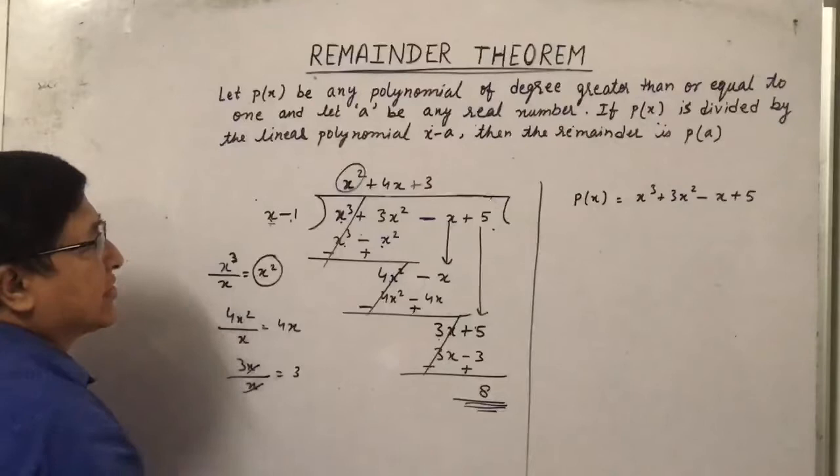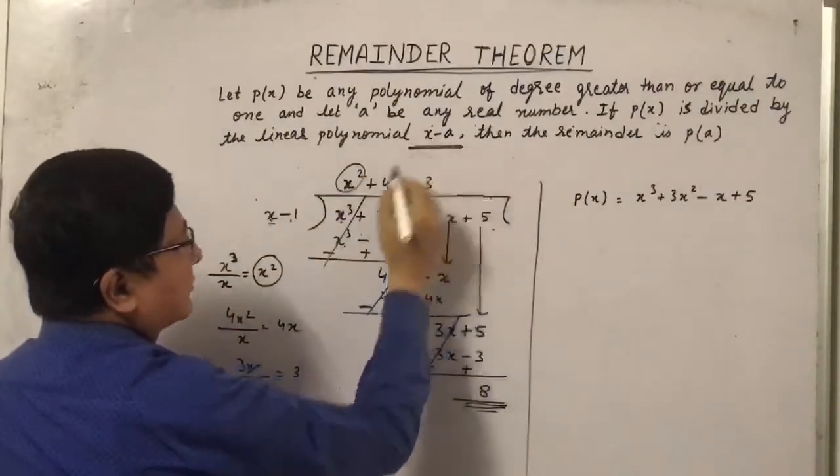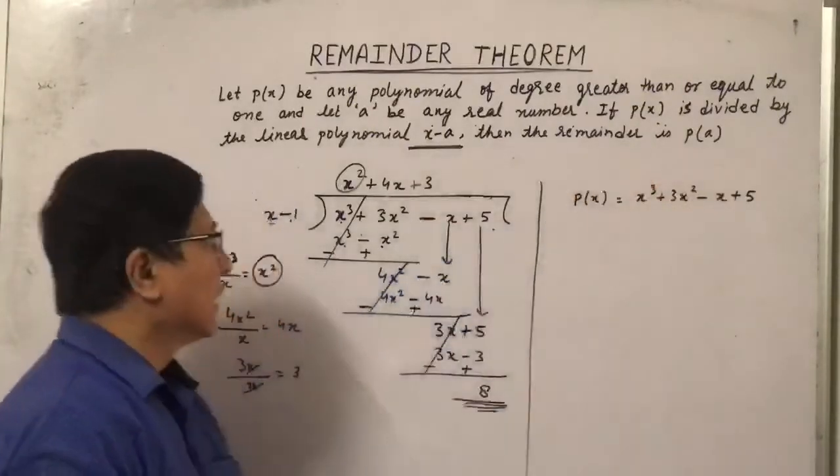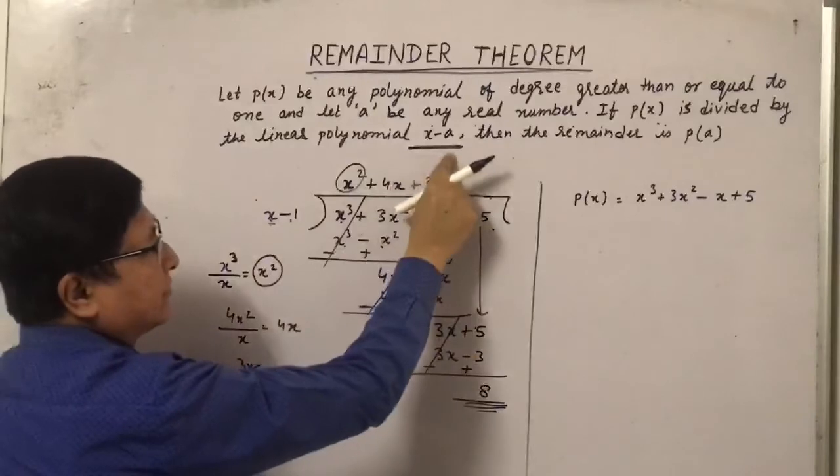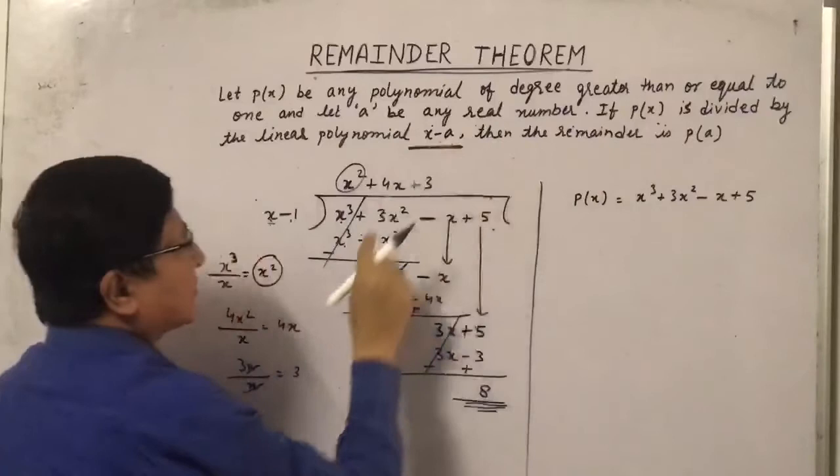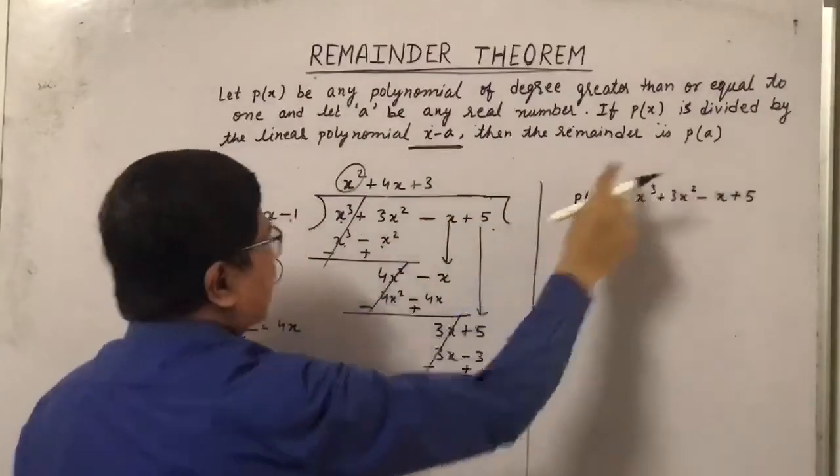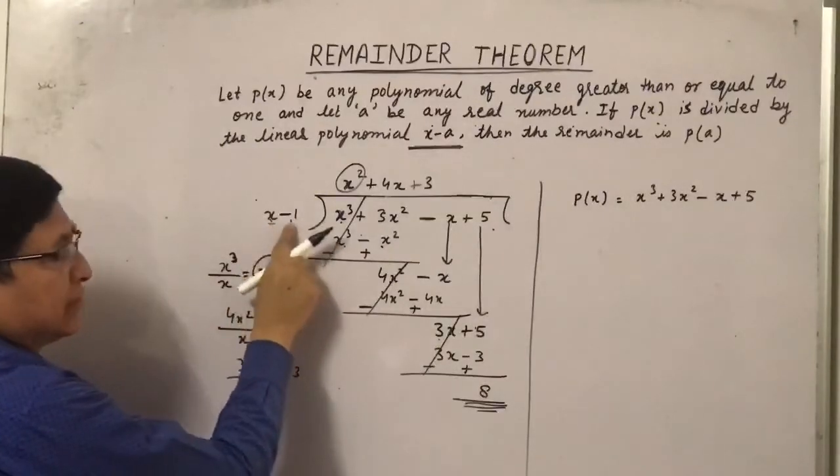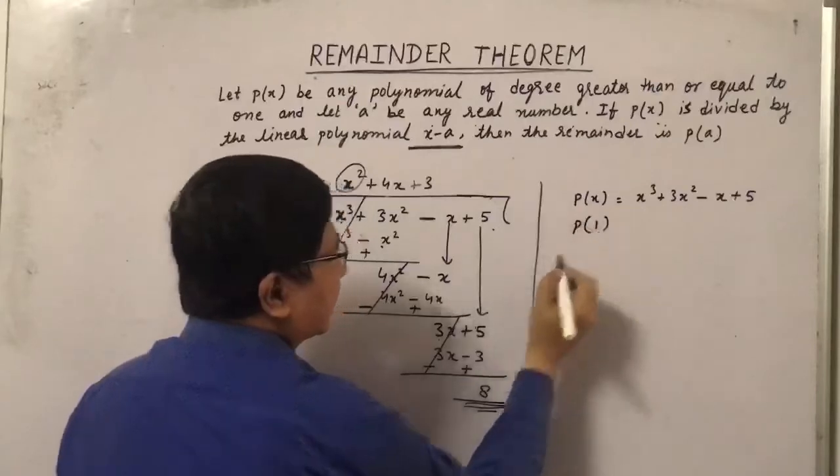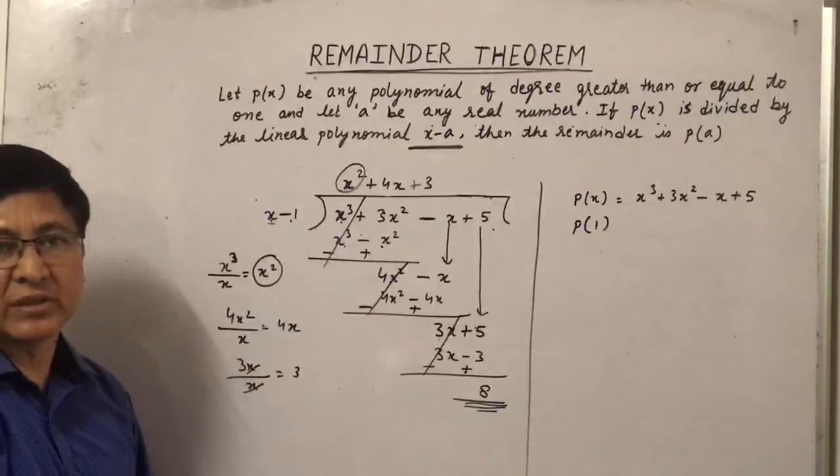If P(x) is divided by the linear polynomial x minus A, then the remainder is P(A). Now this is x minus A, it is divided by x minus A, so the remainder is P(A), the negative of this minus A. So that is P(A) is the remainder. Now if we are divided by x minus 1, so what will be the remainder? P(1) will be the remainder. If we divide it by x plus 1, then P(minus 1) is the remainder.